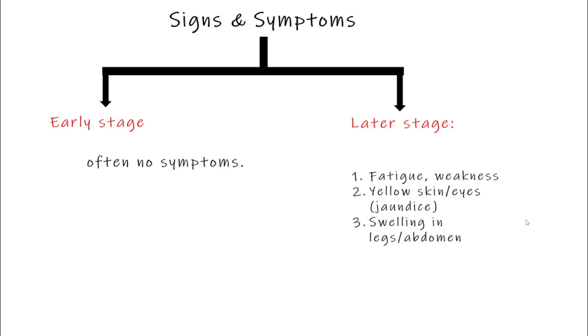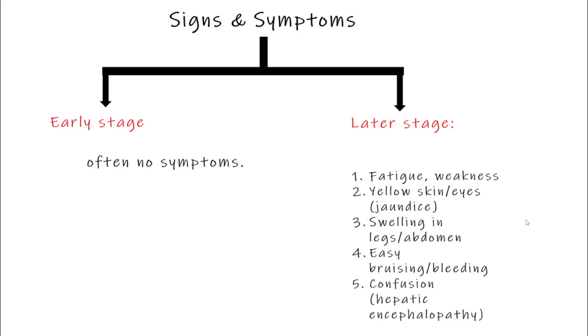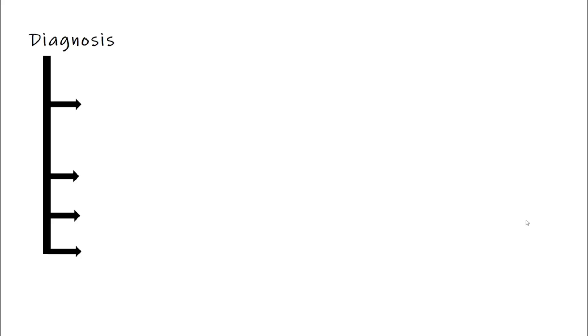Some people bruise or bleed easily because the liver isn't making enough clotting proteins. And in more severe cases, people may experience confusion or forgetfulness — this is called hepatic encephalopathy, caused by toxins building up in the brain.